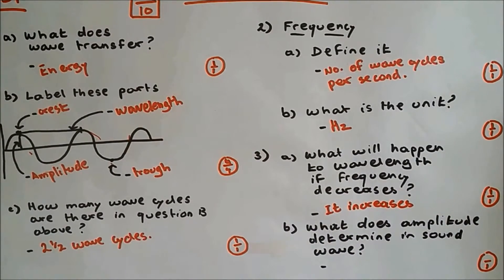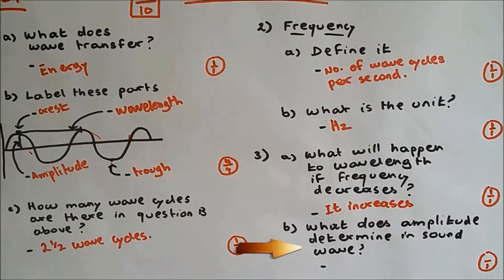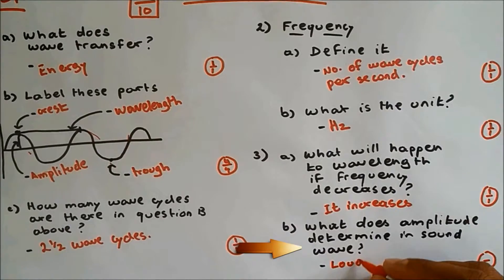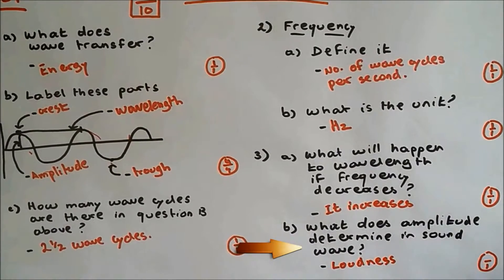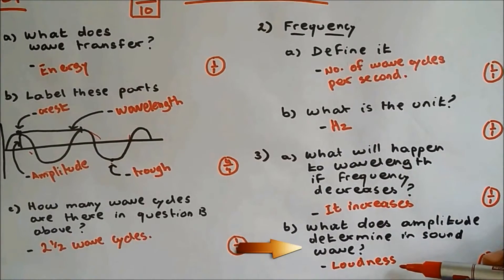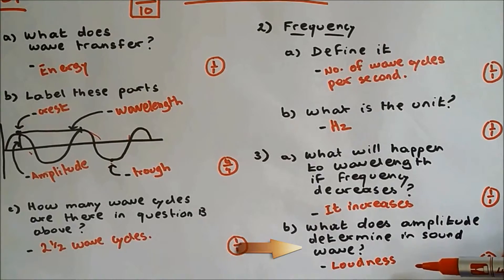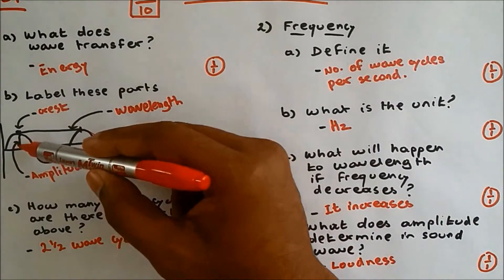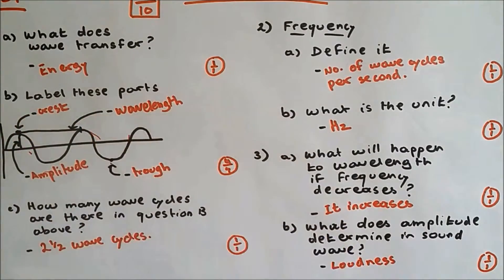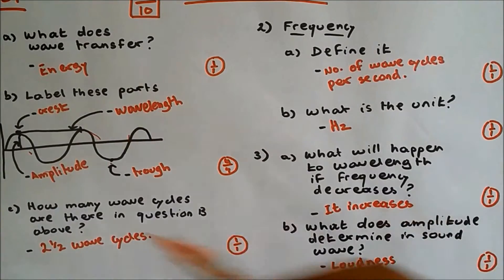Question 3b. What does amplitude determine in sound waves? Now amplitude determines the loudness. So if we have a louder sound, then the amplitude will be much bigger. And if it's quiet sound, the amplitude will be much bigger.